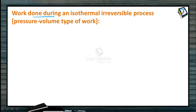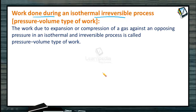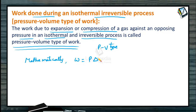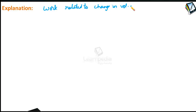Let us understand the work done during an isothermal irreversible process. The work due to expansion or compression of a gas against an opposing pressure in an isothermal and irreversible process is called pressure-volume type of work. This is the type of work related to change in volume of a gas due to pressure difference between the system and surroundings.